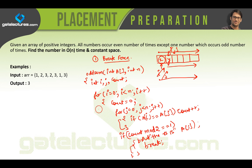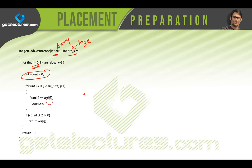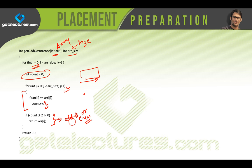This is a simple implementation of the solution. For every element we initialize count as zero, go through the entire array from the beginning, count every occurrence of that element, and after the inner loop we check whether it occurred an odd or even number of times. If it occurred an odd number of times we return that element; otherwise we continue the outer for loop. After the outer loop, if no such number is found, we return -1.